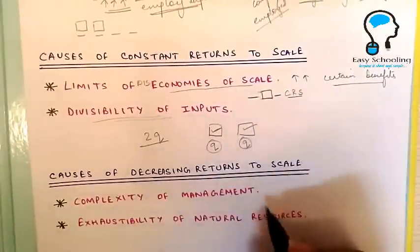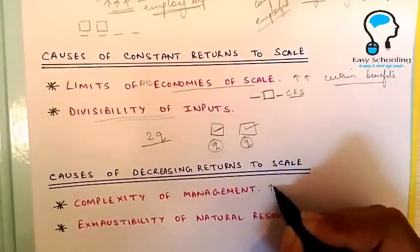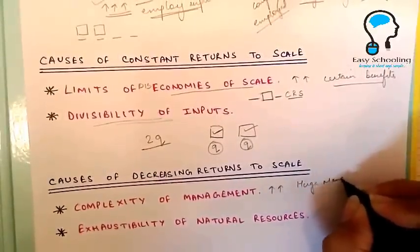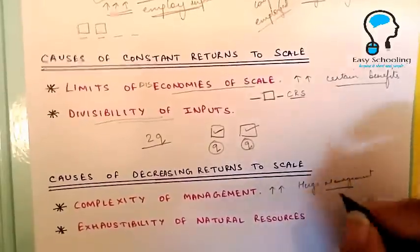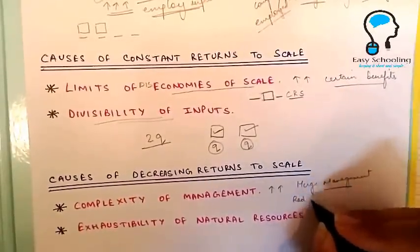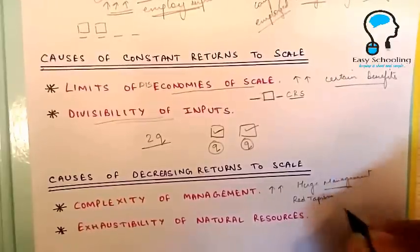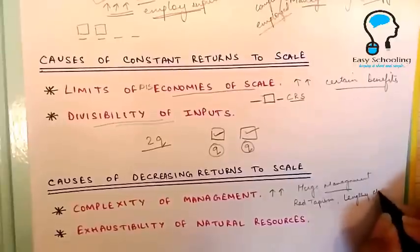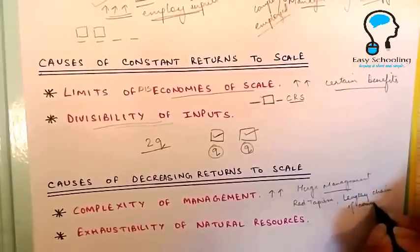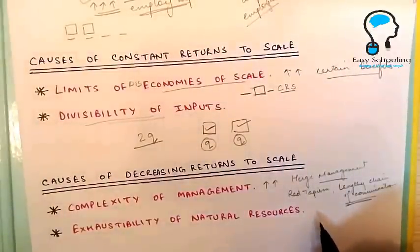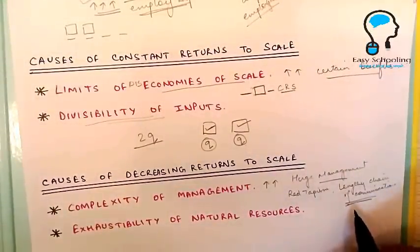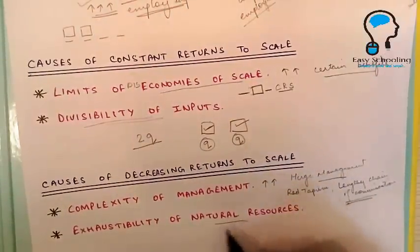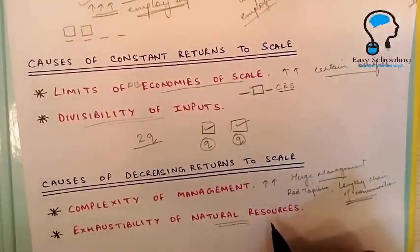The reason for Decreasing Returns to Scale: number one is complexity of management. When there is a large scale of production with huge management, there can be problems of red tapism or a lengthy chain of communication, which may cause confusion between top management and the men on the production line. Another cause of Decreasing Returns to Scale is the limitation of natural resources.